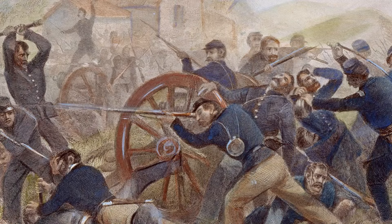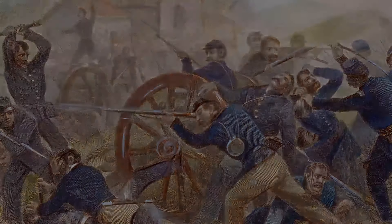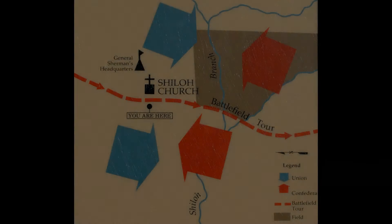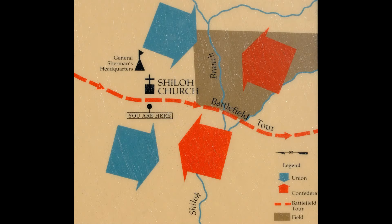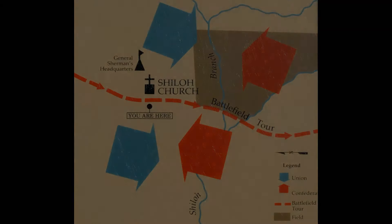As darkness fell on the first day of battle, the situation remained precarious for the Union forces. They had suffered heavy casualties and were pushed back, but they still held a defensive line that could be reinforced overnight.